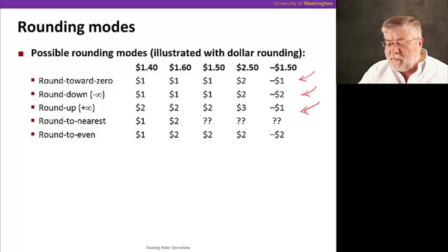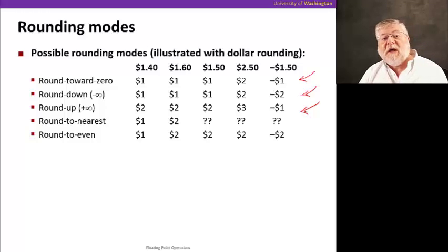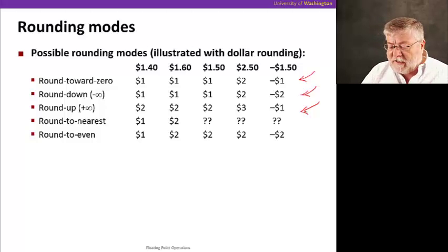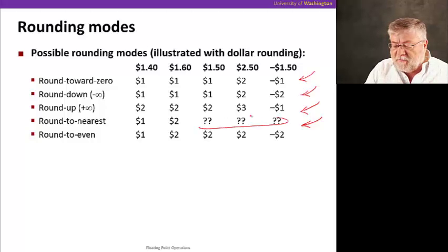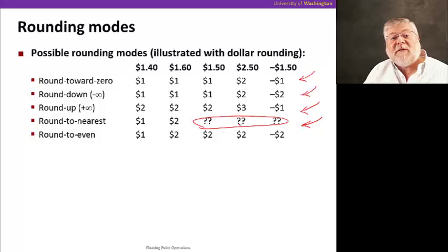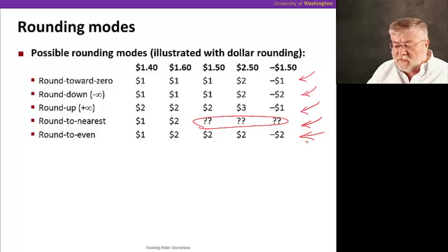And then, always round up towards positive infinity, always moving in one direction there. Another possibility is to round to the nearest value, in this case the nearest dollar amount. But you can see we can have some problems when we're right in the middle, which is the nearest. That's always difficult to define. Another possibility is round towards even, towards the even number that's closest.